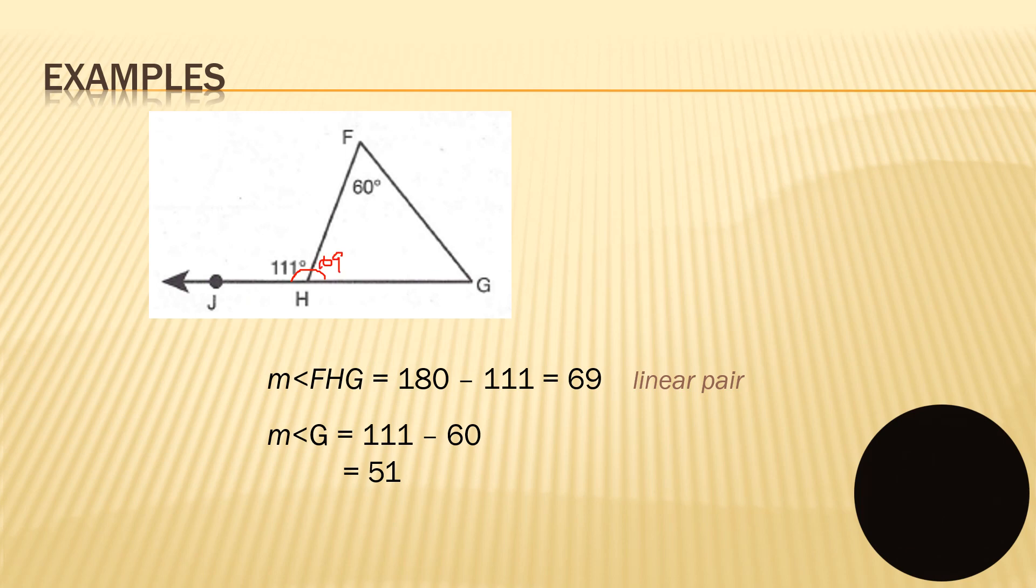Now, if we are going to get this angle G, so we can say that 111 minus 60, so minus this one, that's equals to 51 degrees. Now, how do you know that your answer is correct? So, if we are going to add 69, then 60, then 51, so we have 6 plus 6, 12 plus 1, 13 plus 5, 18. So this is 180 degrees, so it is correct.